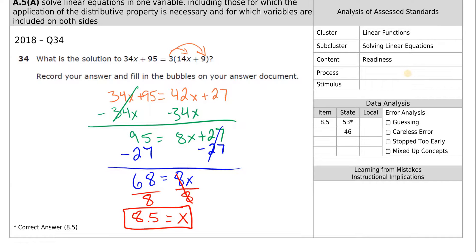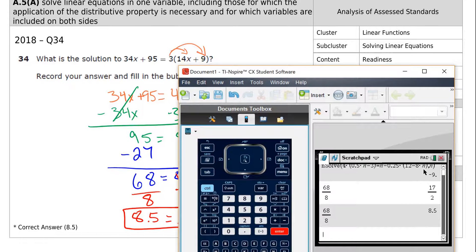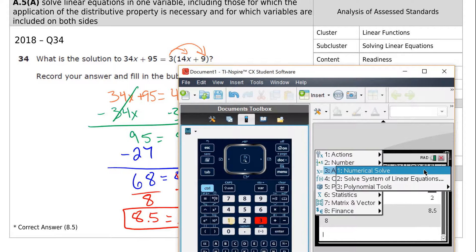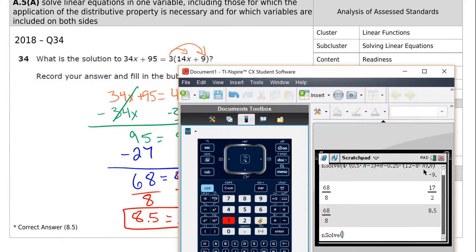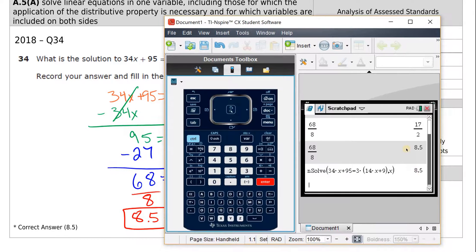Now once again, you remember you can, since there's an equal sign and a one variable all the way through, you can use menu 3, 1, and type the equation in. Let's go ahead and try that. Menu 3, 1, type in the equation, 34x plus 95 equals 3, parentheses, 14x plus 9, close parentheses. What do we have to put at the end? Comma x. Then when we hit enter, it gives us the answer, 8.5.